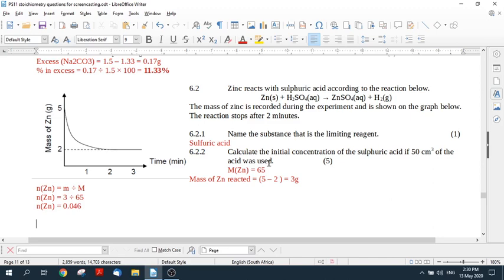We have to take the moles of zinc to the moles of what we're looking for and we are looking for sulfuric acid. So how do we relate them? We look at the balanced equation over here. So we say the mole ratio of zinc to H2SO4 is one to one so H2SO4 is 0.046.